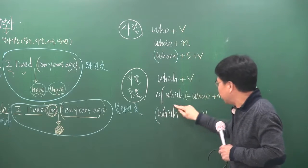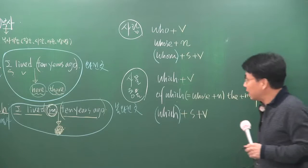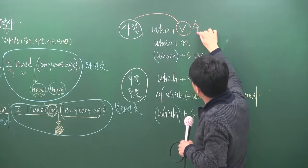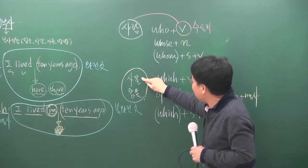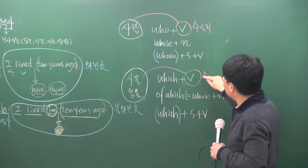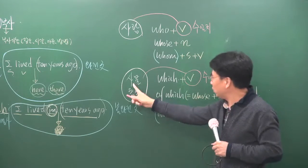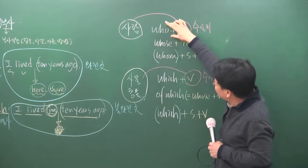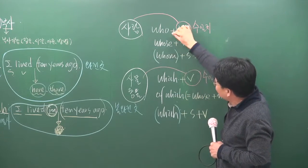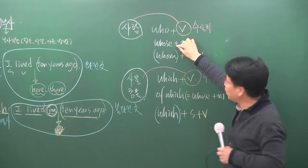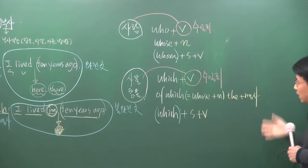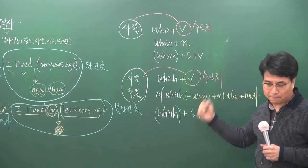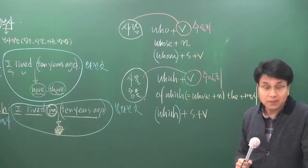목적격은 뒤에 주어 동사의 절이 바로 보이기 때문에 생략이 가능합니다. 시험 문제에서는 선행사와 동사의 수가 맞느냐를 확인합니다. 복수면 동사 복수, 단수면 동사 단수로 들어가야 해요. 사람일 때는 세 가지 모양이 다 다르니까 정확하게 다르게 씁니다.